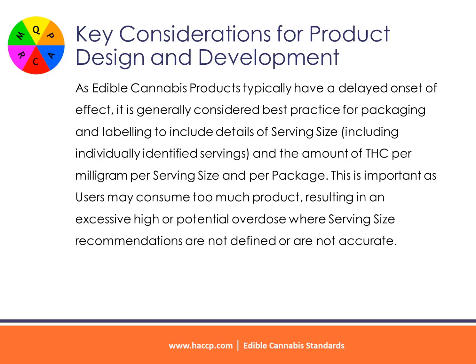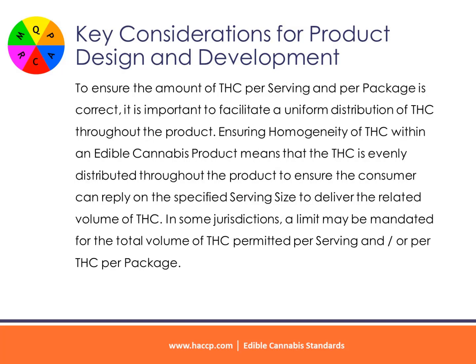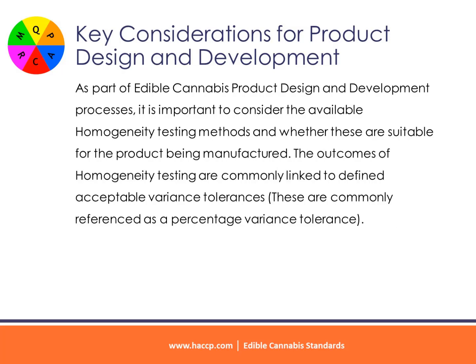This is important as users may consume too much product, resulting in an excessive high or potential overdose where serving size recommendations are not defined or are not accurate. To ensure the amount of THC per serving and per package is correct, it is important to facilitate a uniform distribution of THC throughout the product. Ensuring homogeneity of THC within an edible cannabis product means that the THC is evenly distributed throughout the product to ensure the consumer can rely on the specified serving size to deliver the related volume of THC. In some jurisdictions, a limit may be mandated for the total volume of THC permitted per serving and/or per package.